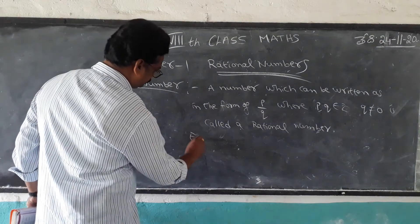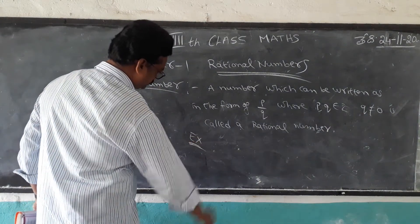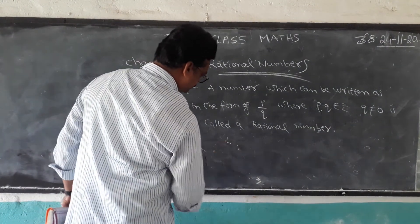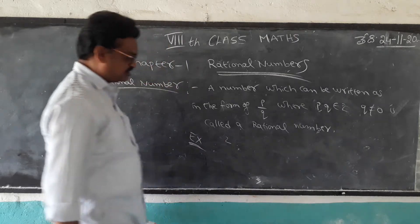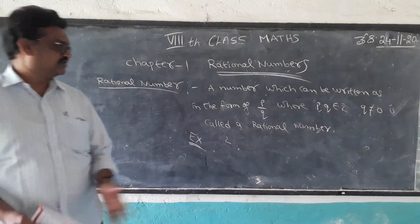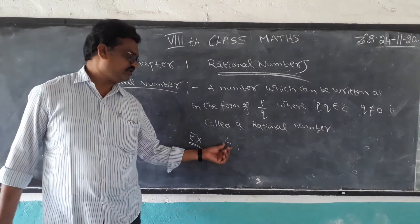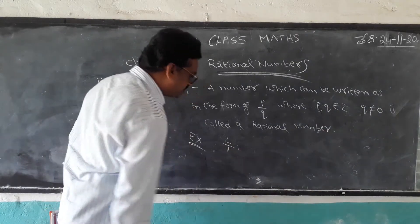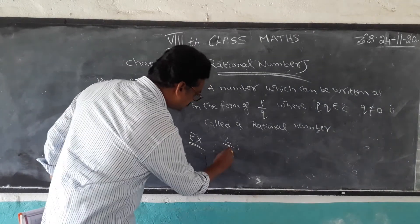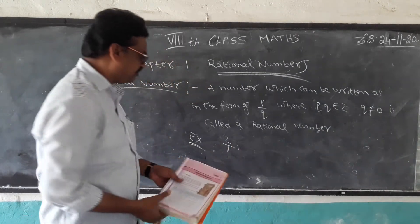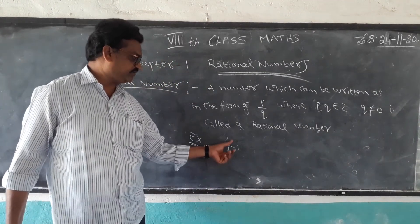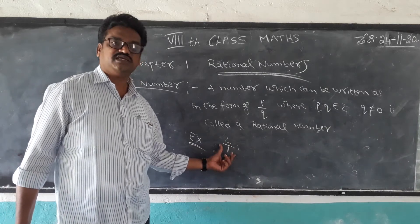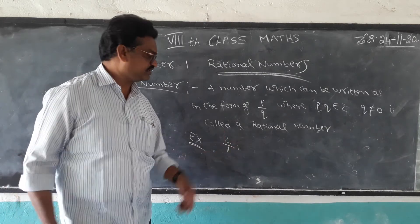The number which can be written in that form — take 2 for example. 2 is a rational number. We write 1 in the denominator part, so 2 by 1 is in the form of P by Q. Therefore, 2 is a rational number.